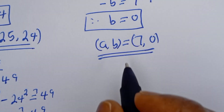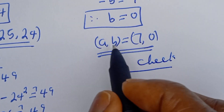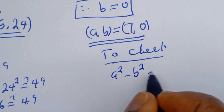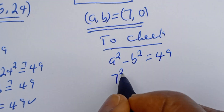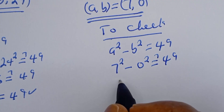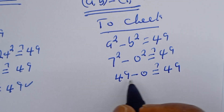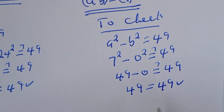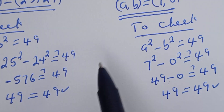From the second case too, let's check. When A is equal to 7 and B is equal to 0, we have A squared minus B squared equals 49. Then 7 squared minus 0 squared must equal 49. That is 49 minus 0 must equal 49. Therefore, the left-hand side 49 equals the right-hand side 49, which is true. I hope you enjoyed the video. Please don't forget to like, share, comment and subscribe to my channel. Thank you.